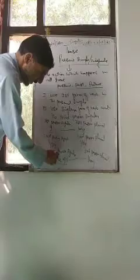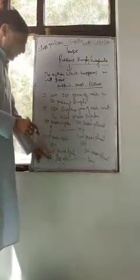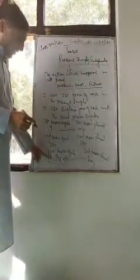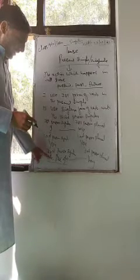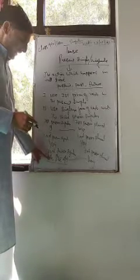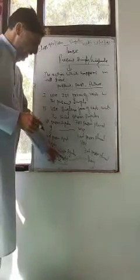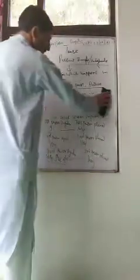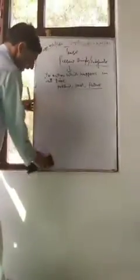He, she, it — these are the third person singular. In Present Simple, we use the singular verb form only with the third person singular: he, she, it.